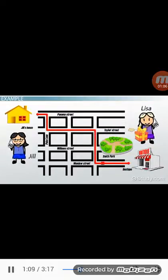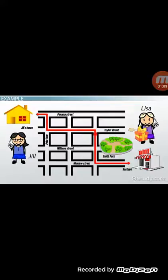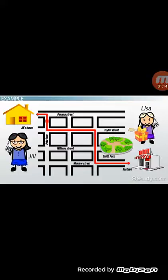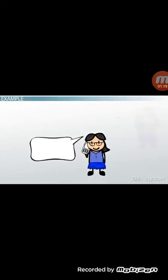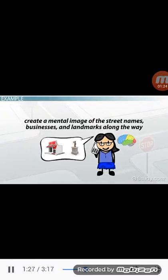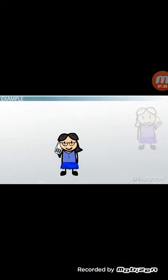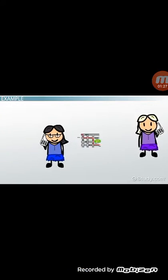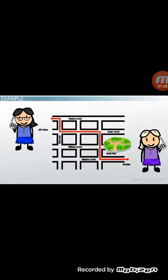Let's look at the Jill and Lisa example a bit more closely. Jill has taken in multiple signals and cues from her environment, which allowed her to create a cognitive map of routes to her house. So when Lisa asked Jill for directions, Jill was able to create a mental image of the street names, businesses, and landmarks along the way and relate that information to Lisa. This mental representation is a cognitive map.